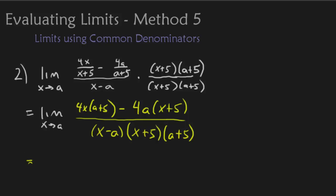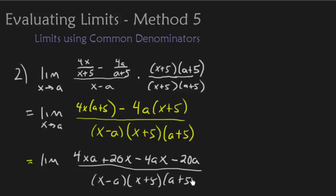Alright, let's go ahead and distribute out everything on the top. So we're going to get 4xa, plus 20x, minus 4ax, minus 20a, all over. We get x minus a, x plus 5, and a plus 5.